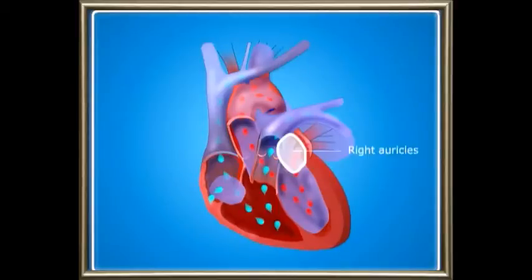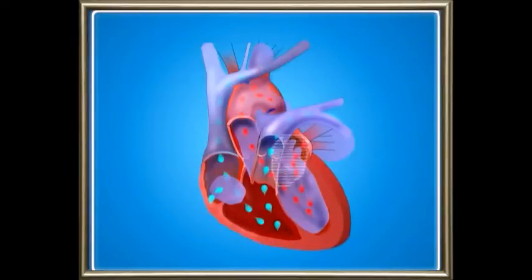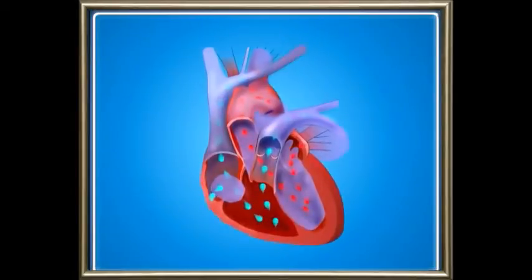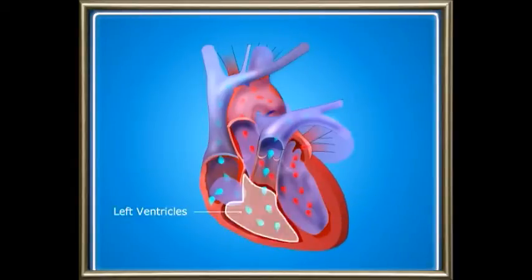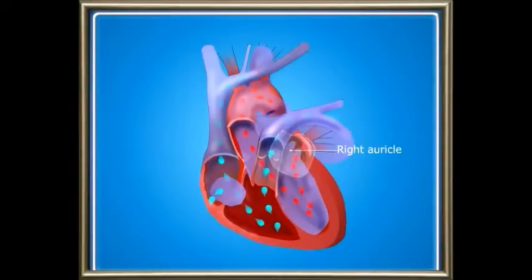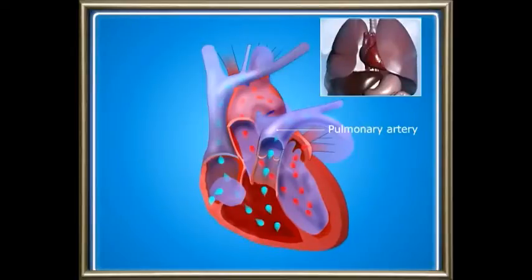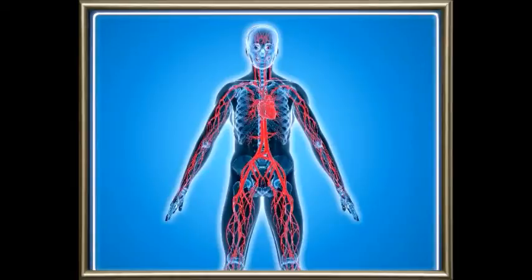The walls of auricles are thin, and these auricles are divided into right and left auricles by a thin membrane. Deoxygenated blood from different parts of the body reaches the right auricle. Oxygenated blood from the lungs is brought to the left auricle by the pulmonary vein. Ventricles are thick-walled, and a thin membrane divides them into right and left ventricles. The right ventricle receives deoxygenated blood from the right auricle and sends it to the lungs through the pulmonary artery. The left ventricle receives oxygenated blood from the left auricle and supplies it to all parts of the body.